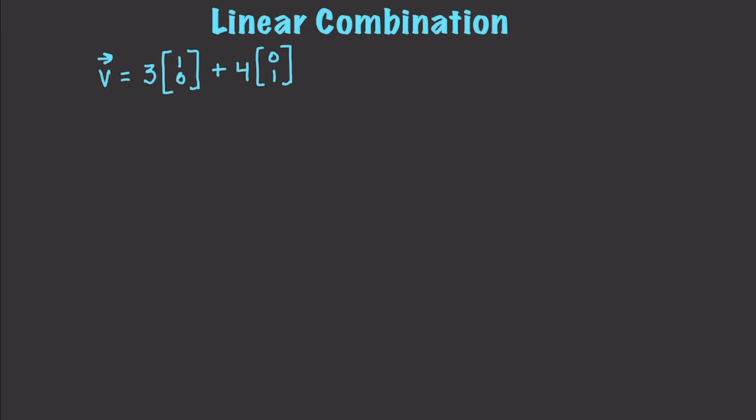And a linear combination could also be the scaled non-basis vectors. So we could have the vector A, 2X plus 3Y. Okay? And there is a basic concept of linear combination. Of course, much more is coming.